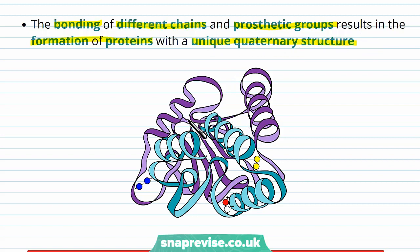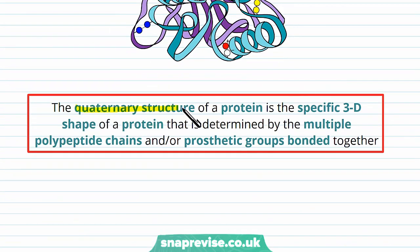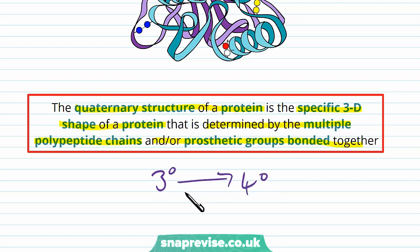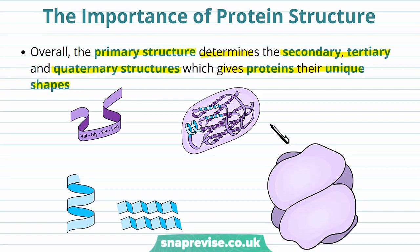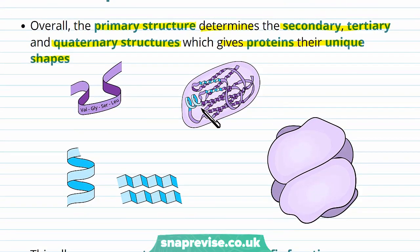The bonding of the different chains and these prosthetic groups results in the formation of proteins with very complex and very unique quaternary structures. The level of complexity is massive by now. So the quaternary structure of a protein is the specific 3D shape of a protein determined by the multiple polypeptide chains and/or prosthetic groups bonded together. Some proteins stop at the third level, but some carry on to the fourth level if they have more than one chain, or they have prosthetic groups, or both. Protein structure is really, really important — this isn't all random.